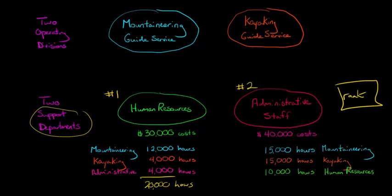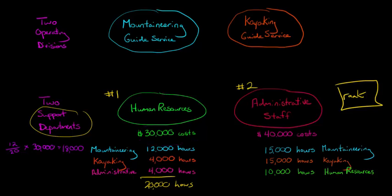So how do we allocate these costs? If mountaineering uses 12,000 out of the total 20,000 hours used by the HR department, we take 12 over 20 and multiply that by $30,000 — because $30,000 is the total cost for the HR department. That gives us $18,000. So $18,000 of this $30,000 in cost is going to go to the Mountaineering Guide Service.